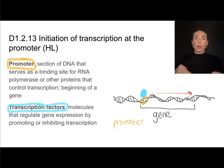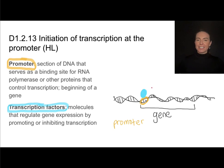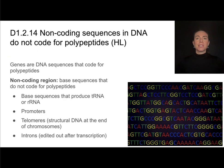These transcription factors are molecules that regulate transcription by either promoting transcription — saying, let's transcribe this gene — or inhibiting it. They can inhibit transcription by preventing RNA polymerase from binding. These are called transcription factors. The promoter itself does not get transcribed; it's just the starting point.